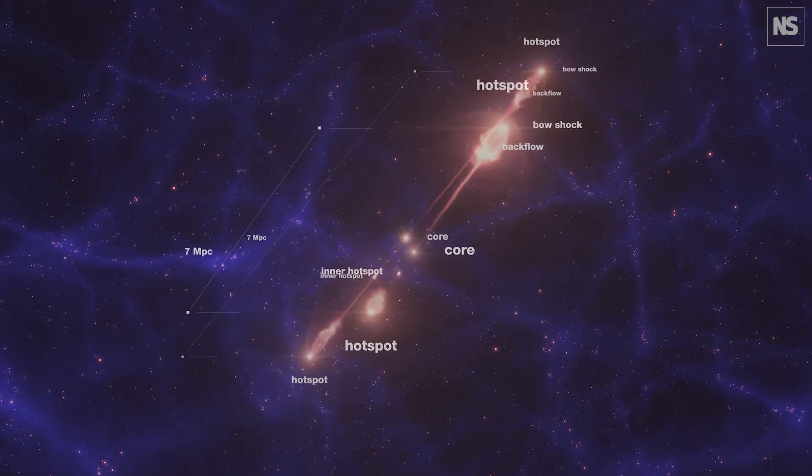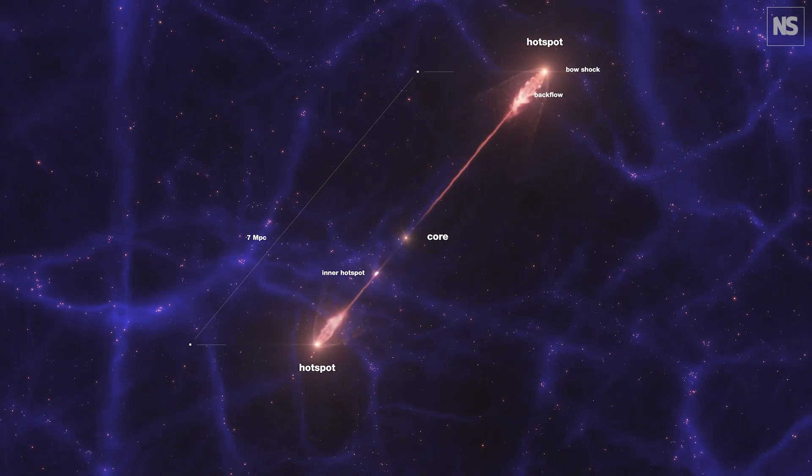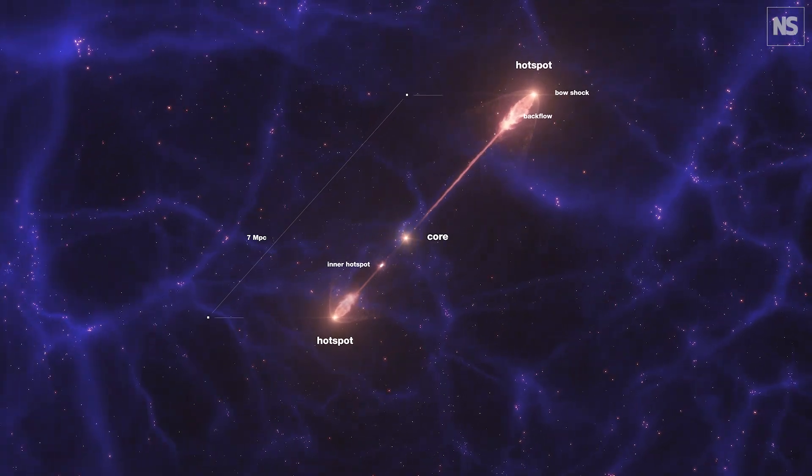We've discovered a twin jet system emerging from a black hole and this pair of jets is about 23 million light years long.